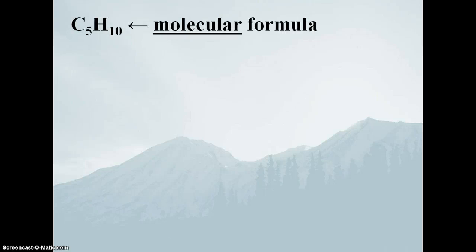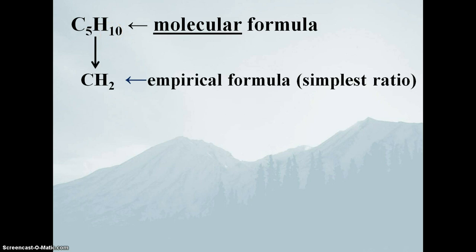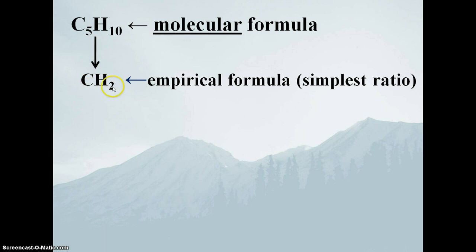We're going to spend most of our time talking about molecular compounds. There are several different kinds of chemical formulas. The most fundamental is simply a molecular formula — for example, a molecule with five carbons and ten hydrogens. I can reduce this because five and ten share a common factor of five, giving a simpler one-to-two ratio known as CH2, which is called an empirical formula. An empirical formula is the smallest ratio and is different from a molecular formula. CH2 doesn't actually exist as a stable species, but it tells us the relative amounts of carbon to hydrogen — one to two.